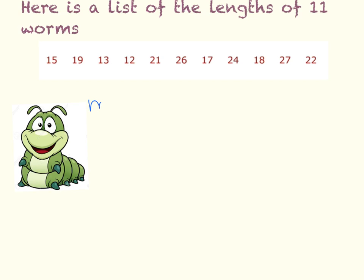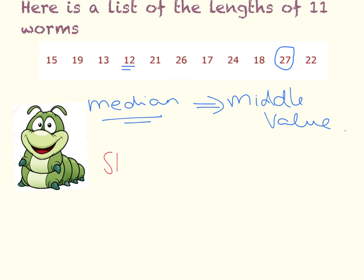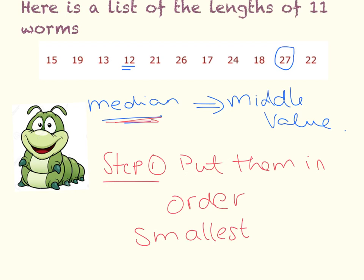Every time I'm asked to find the median, I need everybody here to remember that the median is the middle value. We can investigate this data a little bit further. The biggest worm is 27 centimeters long, and the smallest one is 12 centimeters. When we find the median, our first step is always to put them in order from the smallest to the biggest. Step one, when we're looking for the median, is always to put them in order from the smallest to the biggest.